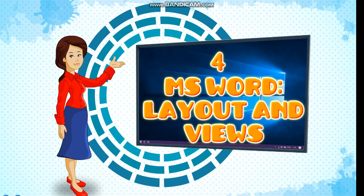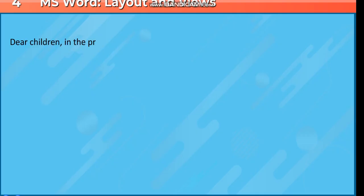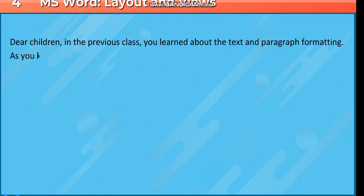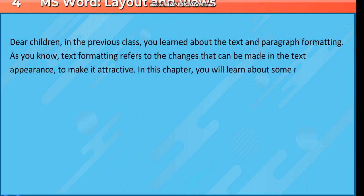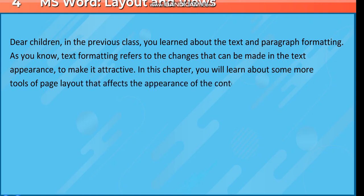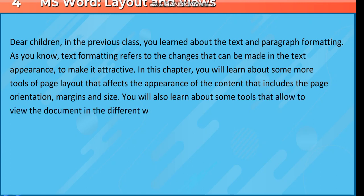Chapter 4: MS Word Layout and Views. Dear children, in the previous class you learnt about text and paragraph formatting. Text formatting refers to the changes that can be made in the text appearance to make it attractive. In this chapter, you will learn about some more tools of page layout that affect the appearance of the content, including page orientation, margins, and size. You will also learn about tools that allow you to view the document in different ways.